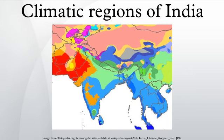The diurnal range of temperature is also high in these mountain regions. The states of Jammu and Kashmir, Himachal Pradesh, Uttarakhand, Arunachal Pradesh, and Sikkim experience this kind of weather.